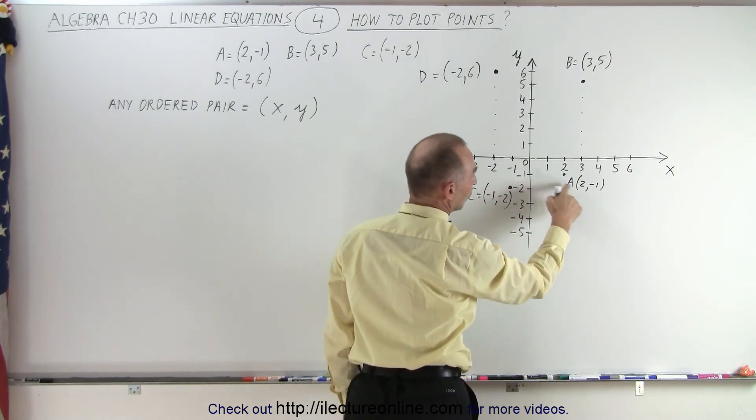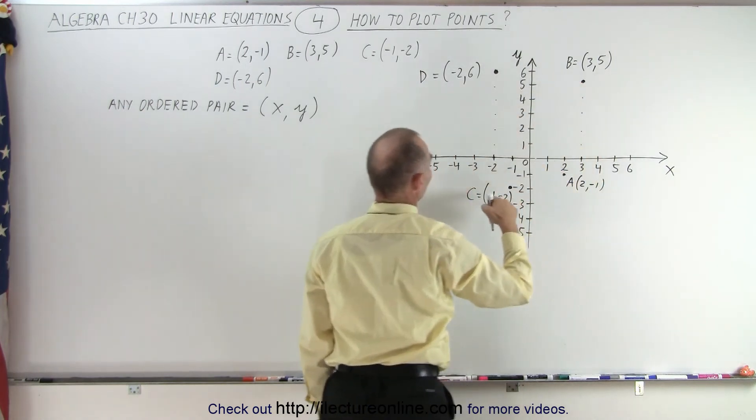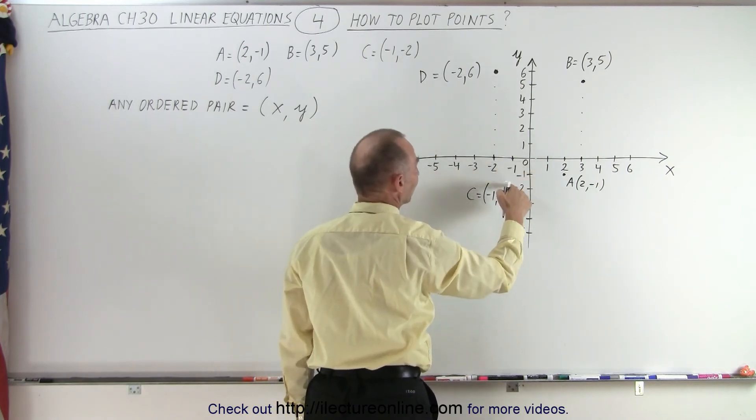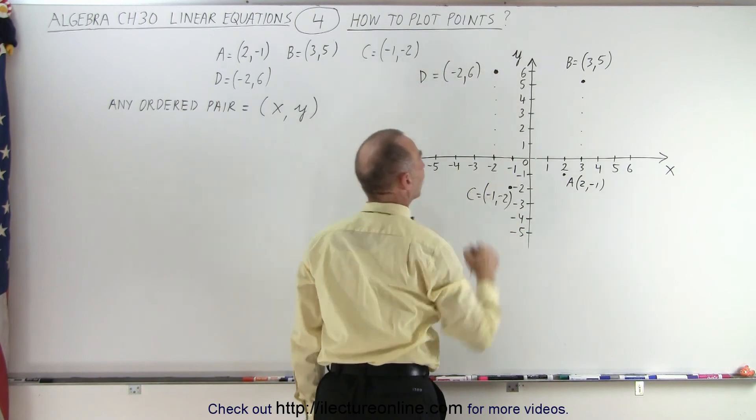So here we have point A, 2, negative 1. We have point B, 3, 5. We have point C, which is negative 1, negative 2. And we have point D, which is negative 2 and positive 6.